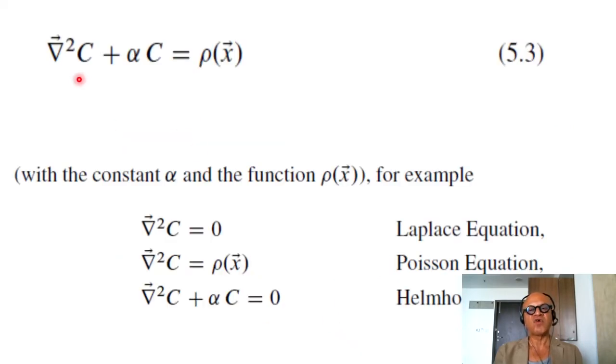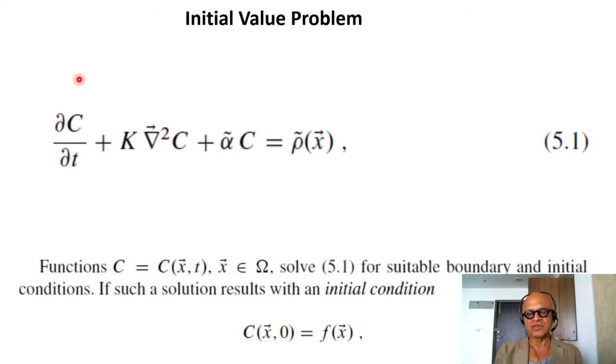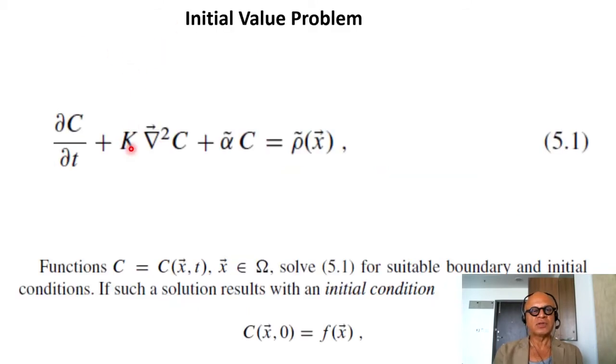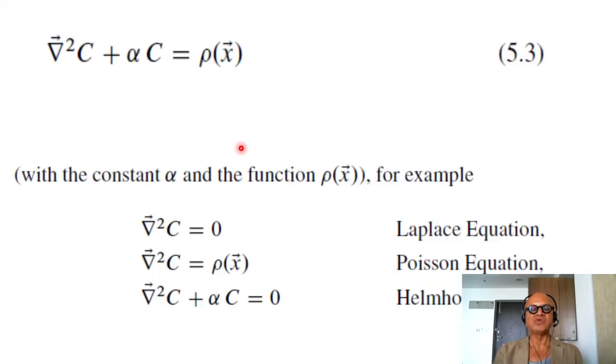So that gives you the form del squared c. If this goes into a steady state, then obviously this term will go to 0. Then you can get an equation in steady state where grad squared c plus alpha c equals rho x bar, where we have taken k into alpha tilde and made a new constant alpha. It's just a general representation that we are looking at.